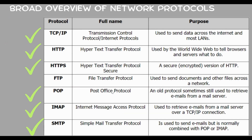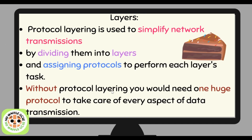Protocol layering is used to simplify network communication by dividing it into layers and assigning protocols to perform each layer's task. It's the equivalent of dividing a big task into subtasks to make it easier — these subtasks are called layers. Without protocol layering, you would need one huge protocol to take care of every aspect of data transmission.